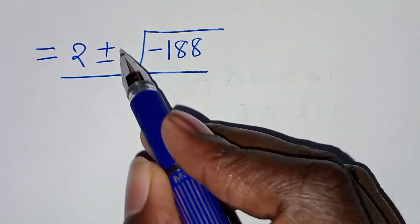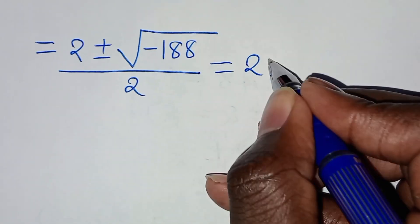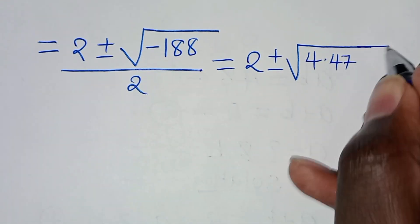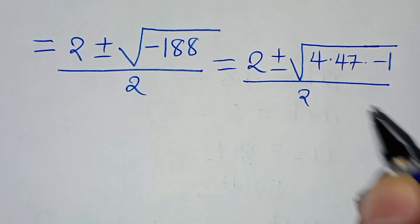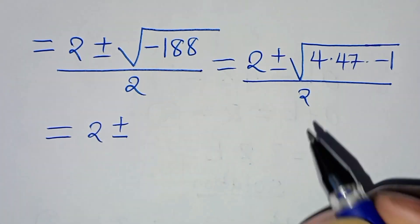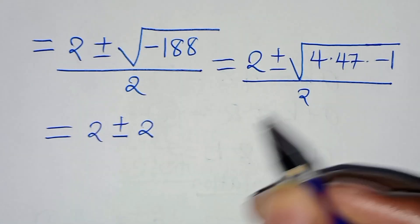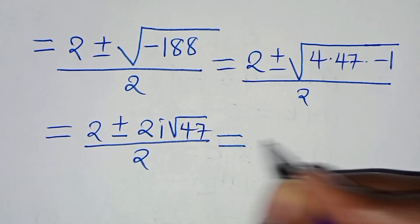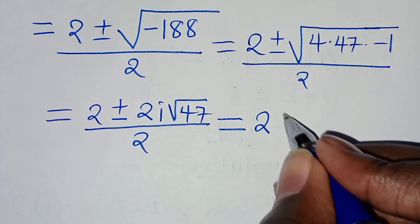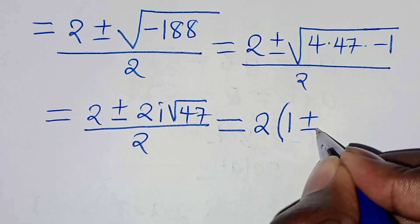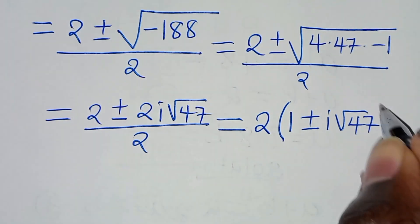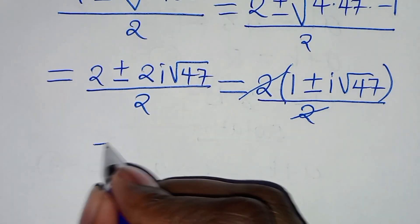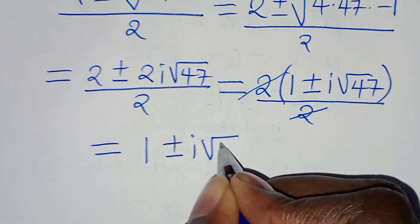We can express negative 188 as 4 times 47 times minus 1. So we have 2 plus or minus the square root of 4 — which is 2 — times the square root of minus 1 — which is i — times the square root of 47, all divided by 2. This simplifies to 1 plus or minus i times the square root of 47.